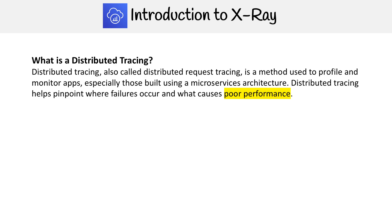So what exactly is X-Ray? It is a distributed tracing system. Distributed tracing, also known as distributed request tracing, is a method used to profile and monitor apps, especially those built using a microservice architecture. Distributed tracing helps pinpoint where failures occur and what causes poor performance. Those are the major things that X-Ray is doing.